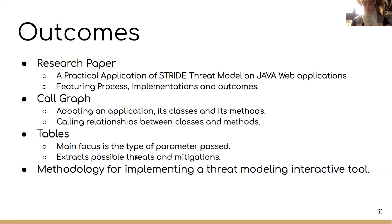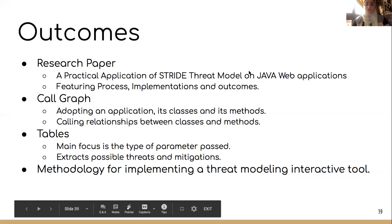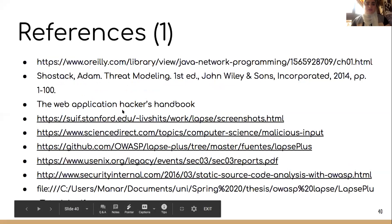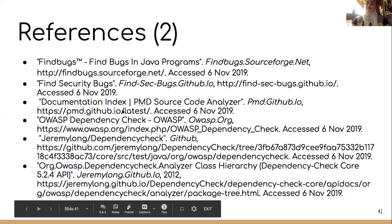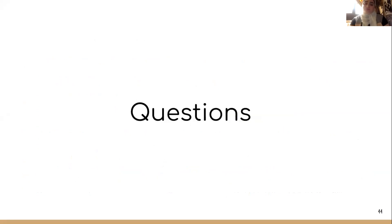Our final outcomes will be a research paper and a practical application of the threat model on Java web applications, featuring process implementations and outcomes. This includes a call graph adopting an application's classes and methods and the calling relationships between them, plus mitigations and threats tables focused on the type of parameter passed — such as a string — to extract possible threats and mitigations. A possible outcome is a methodology for implementing an interactive threat modeling tool. Those are our references. Any questions?